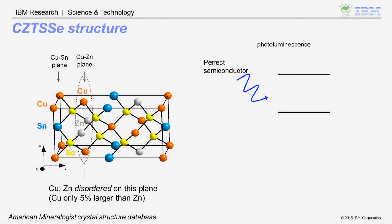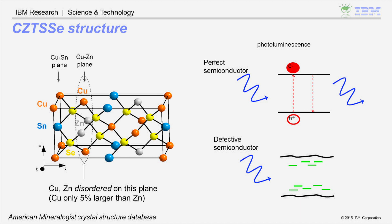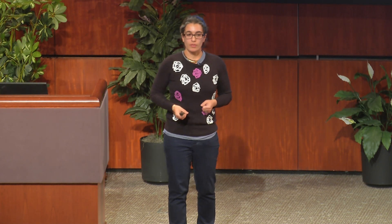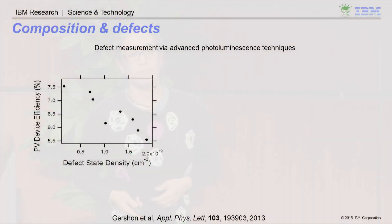Photoluminescence is a technique where we shine light on the semiconductor, excite electrons from the valence band into the conduction band, and measure the photons emitted when they decay back down. In a perfect semiconductor, emitted photons have energy on the order of the band gap. In a highly defective semiconductor, carriers interact with charged states inside the material, and emitted light is lower in energy than the band gap. Analyzing this lower-energy light gives information about the defect structure and disorder. Fitting the data to models allows us to extract a rough prediction of defect density. The plot shows that higher defect density and worse atomic ordering lead to reduced overall device performance.